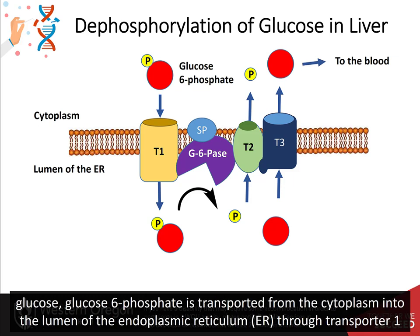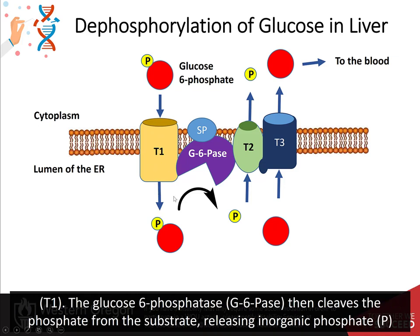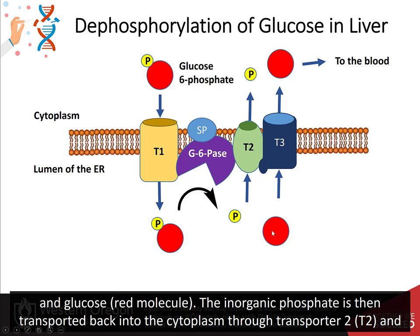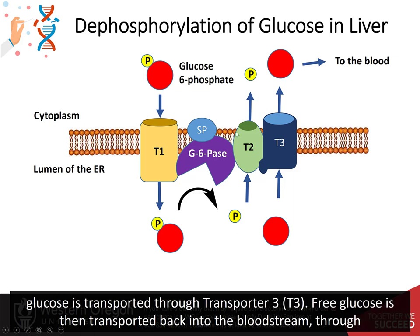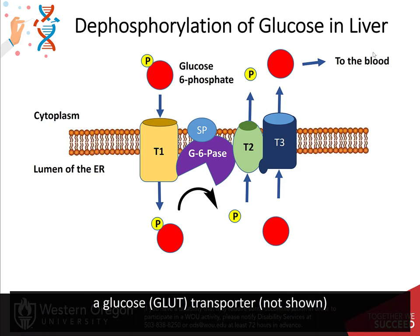To mediate the dephosphorylation of glucose, glucose-6-phosphate is transported from the cytoplasm into the lumen of the endoplasmic reticulum (ER) through transporter 1. The glucose-6-phosphatase then cleaves the phosphate from the substrate, releasing inorganic phosphate and glucose. The inorganic phosphate is then transported back to the cytoplasm through transporter 2, and glucose is transported through transporter 3. Free glucose is then transported into the bloodstream through a glucose transporter.